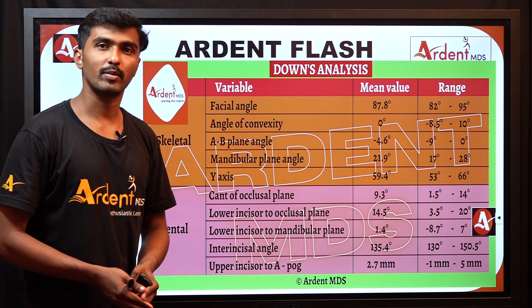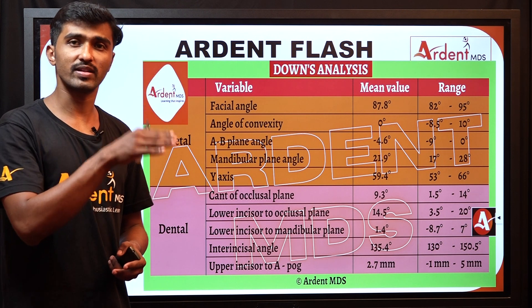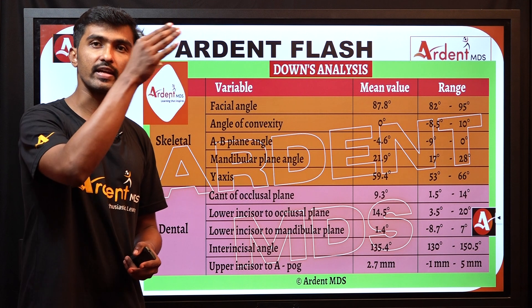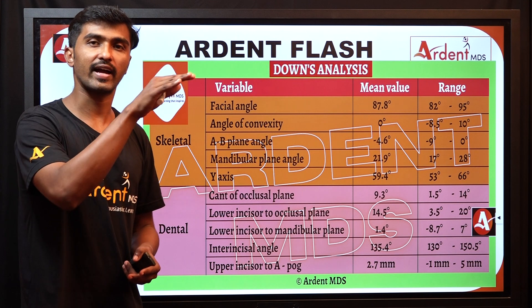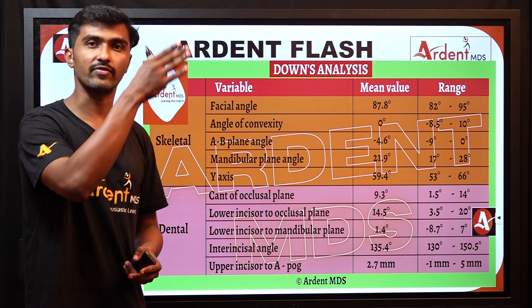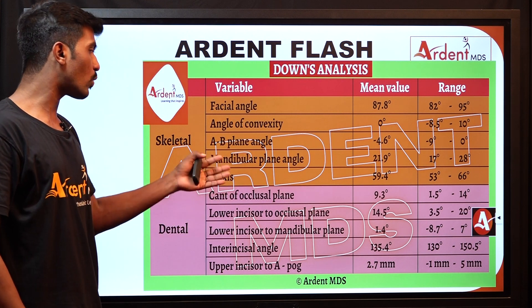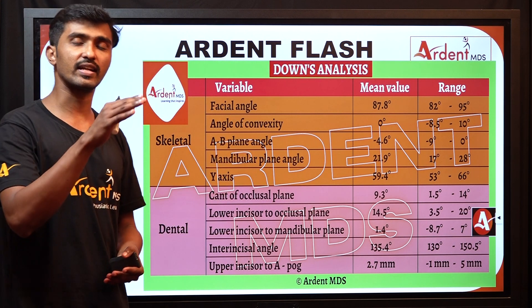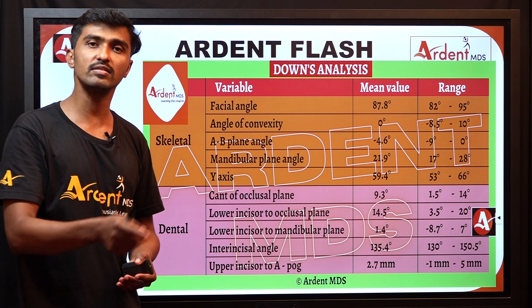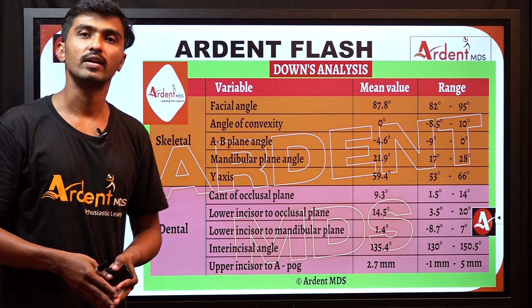The facial angle is formed by the facial plane and the Frankfurt horizontal plane. The facial plane is a line connecting nasion and pogonion. The angle between the Frankfurt horizontal and the facial plane forms the facial angle. The Y-axis is the angle formed between the growth axis from sella to gnathion with respect to the Frankfurt horizontal plane.